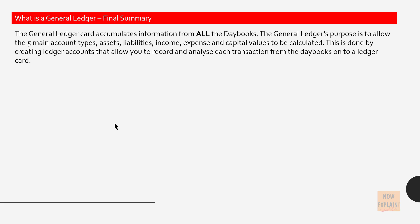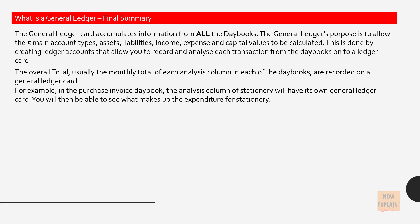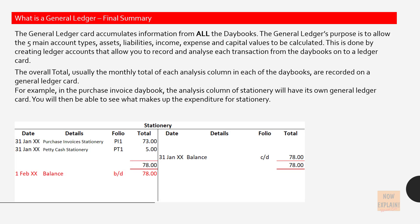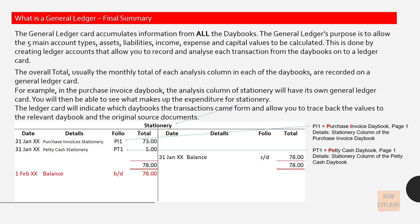What is a general ledger? The final summary. The general ledger card accumulates information from all the daybooks to allow the five main account types — assets, liabilities, income, expense, and capital — to be calculated. The overall total, usually the monthly total of each analysis column in each of the daybooks, is recorded on a general ledger card. For example, in the purchase invoice daybook, the analysis column for stationery will have its own general ledger card, so you can see what makes up the expenditure for stationery. The ledger card indicates which daybooks the transactions came from, allowing you to trace back the values to the relevant daybook and the original source documents.